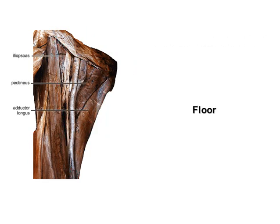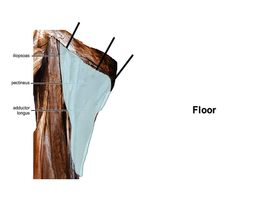The floor of the femoral triangle is formed by the iliopsoas, medially by the pectineus and by the adductor longus. Its roof is formed by the fascia lata.